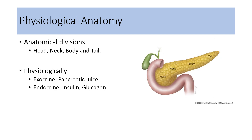Pancreas can be divided into anatomical divisions as well as physiological functions. Anatomical division includes parts like head, neck, body, and tail of the pancreas. Physiologically, it divides into exocrine pancreas and endocrine pancreas. Exocrine pancreas includes secretion of the pancreatic juice that is useful in digestion and absorption of foodstuffs in the small intestine. Endocrine pancreas deals with the release of hormones like insulin, glucagon, and somatostatin.